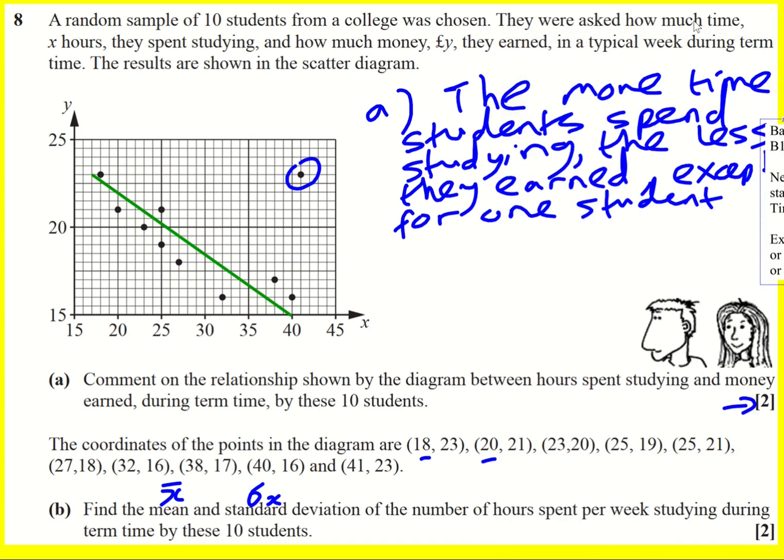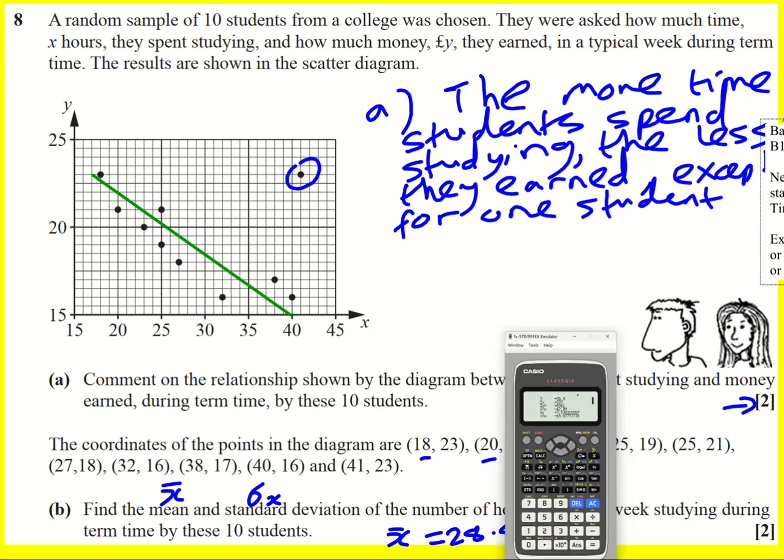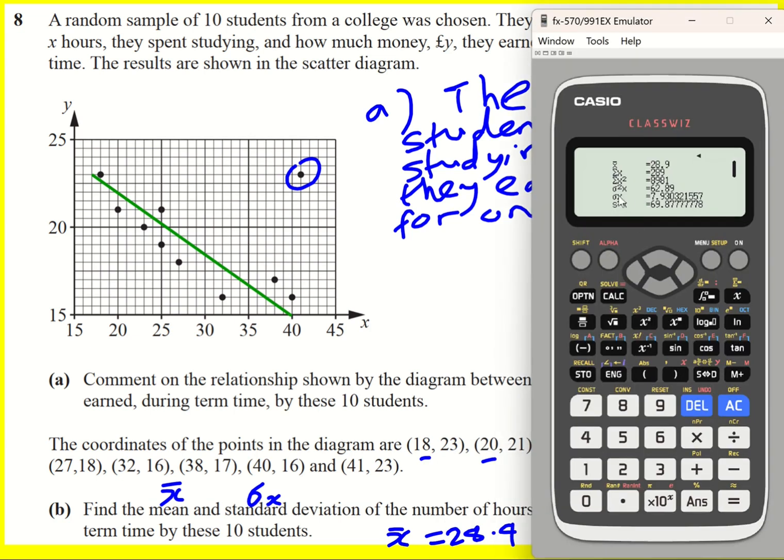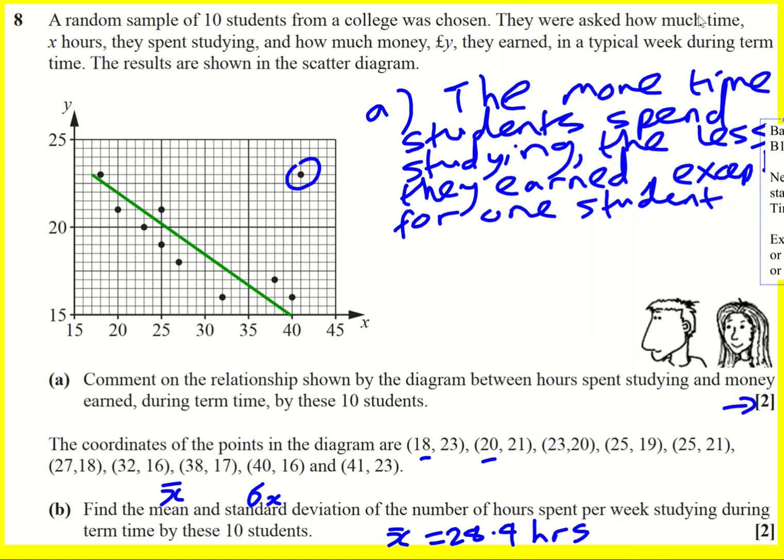X bar is 28.9 hours, and the standard deviation, this sigma x, is 7.93. Nice.